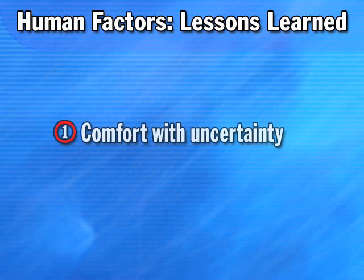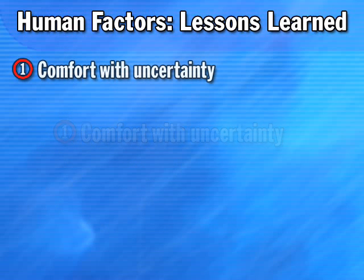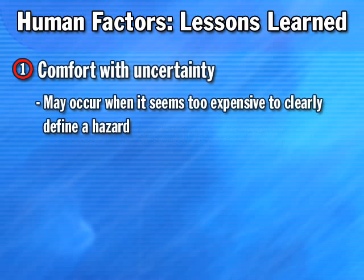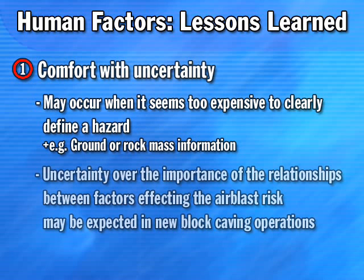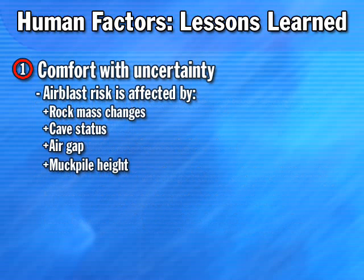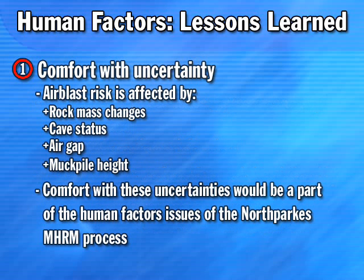Comfort in uncertainty refers to the natural human tendency for people to feel comfortable with risk because they have not experienced a related unwanted event. This may be an issue in mining when hazards are difficult to clearly understand without investigative methods that would make mining uneconomical. Ground or rock mass related information is an example. Uncertainty about the importance and the relationship between factors such as rock mass changes, cave status, air gap, muck pile height, and air blast risk might be expected in a new block caving operation. Developing comfort with this uncertainty, possibly reinforced by the absence of any unwanted air blast events, would be a part of the human factors of the North Parks major hazard risk management.